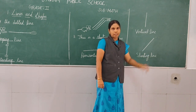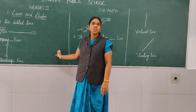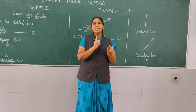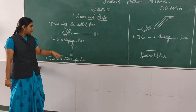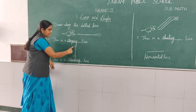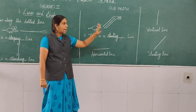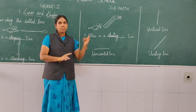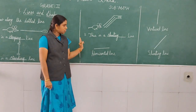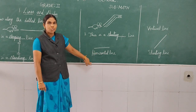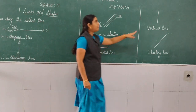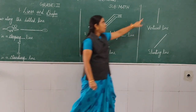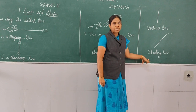Okay children, what have we learnt in this session? We have learnt three types of lines: sleeping line, standing line, and slanting line. And we have also learnt new words for these three types — horizontal line, vertical line, and slanting line. You can see more in the next session.